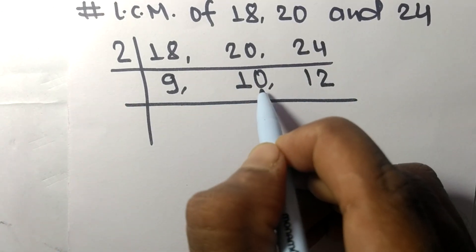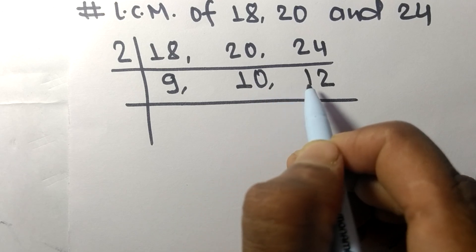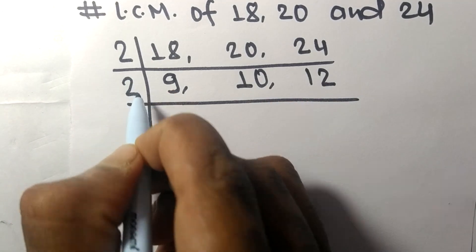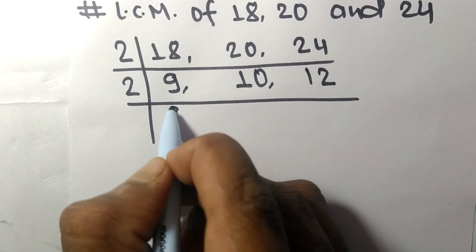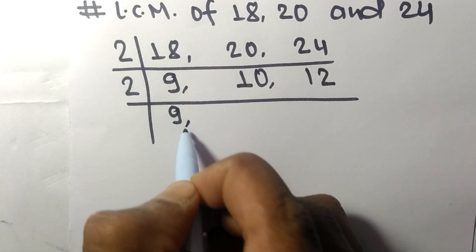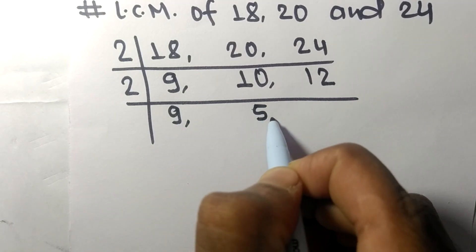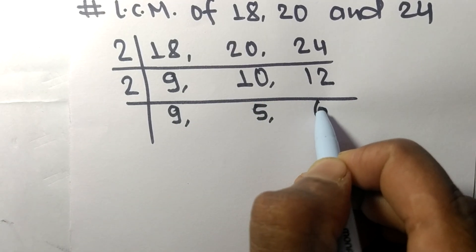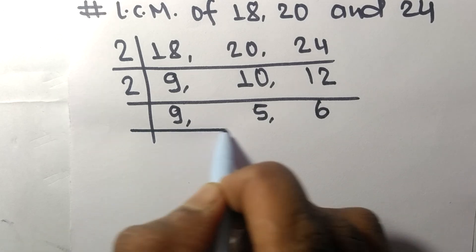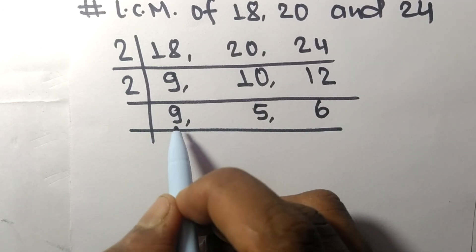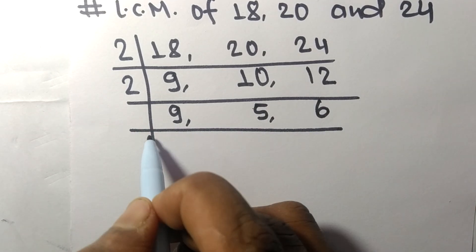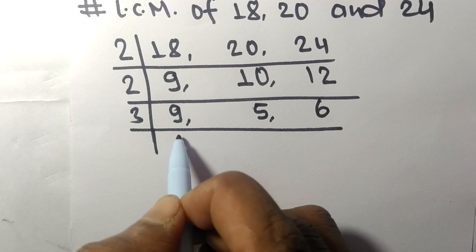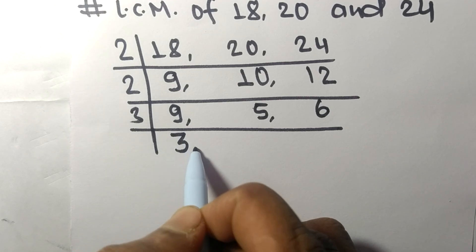Now 10 and 12 are divisible by 2, but 9 is not divisible, so it stays the same. 2 times 5 is 10, 2 times 6 is 12. Now 9 and 6 are divisible by 3: 3 times 3 is 9.